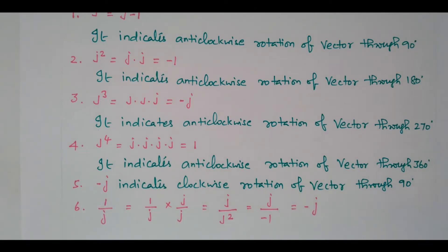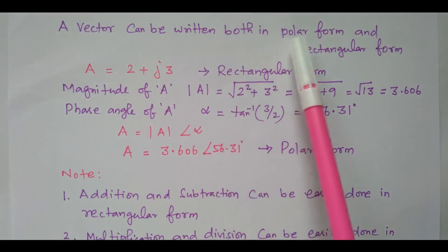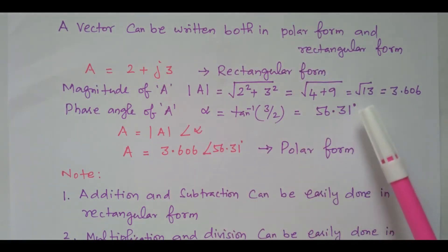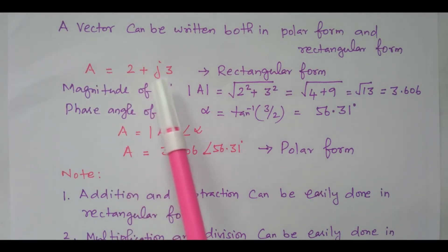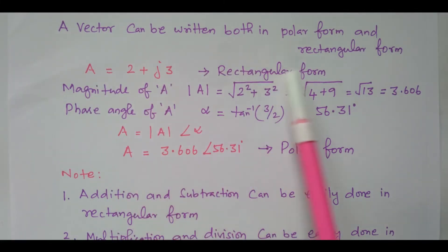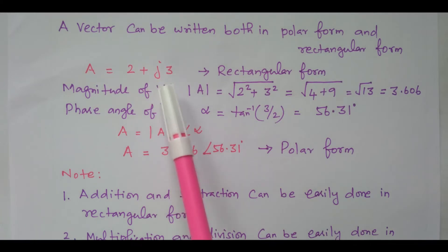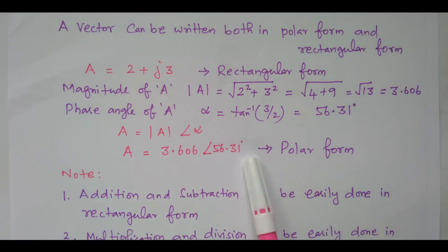Now we will go to the rectangular and polar form. The vector can be represented in polar form or rectangular form. What is polar form or rectangular form? A equal to 2 plus J3 is the rectangular form — real term plus imaginary term with J operator. It is a rectangular form. And this is nothing but the polar form.